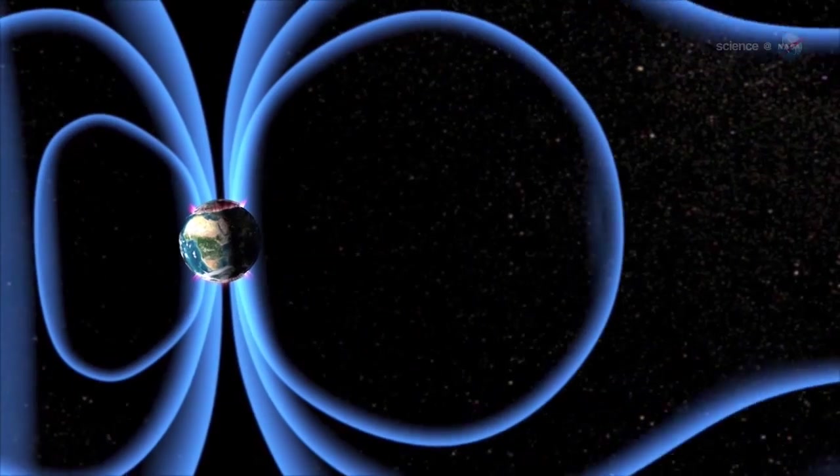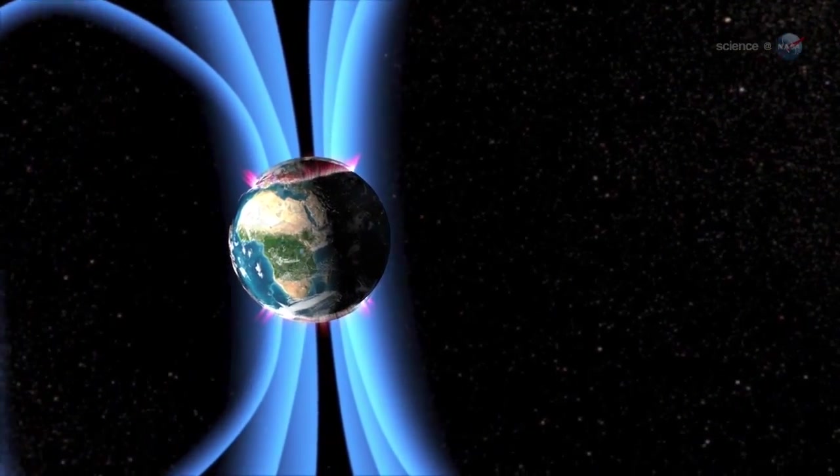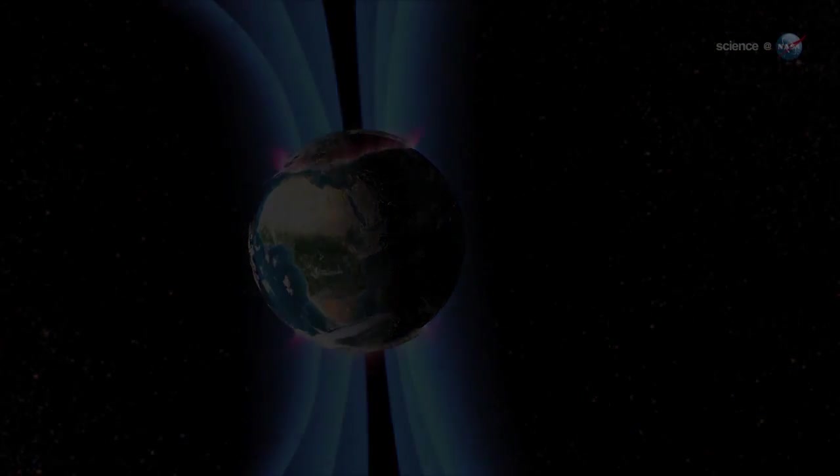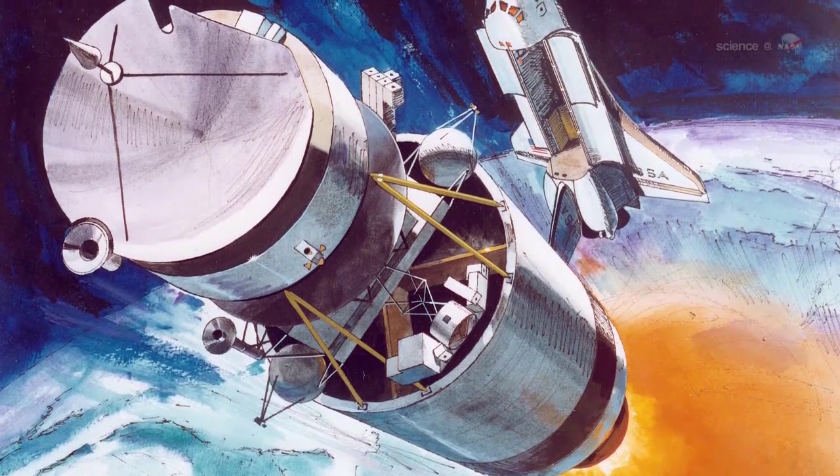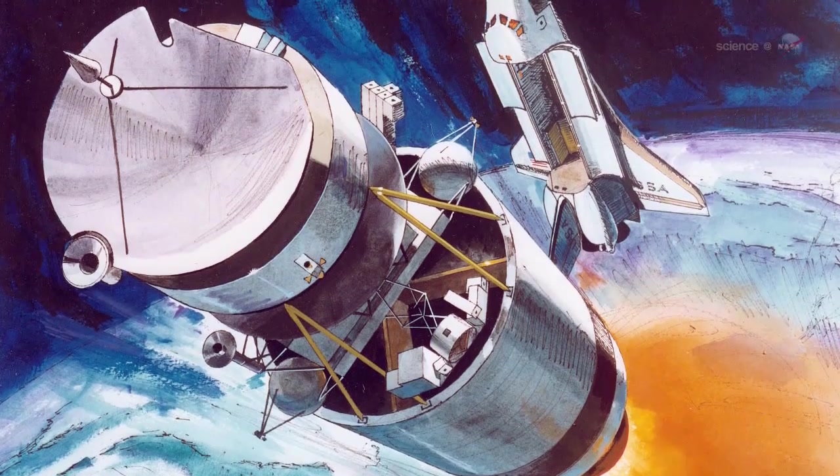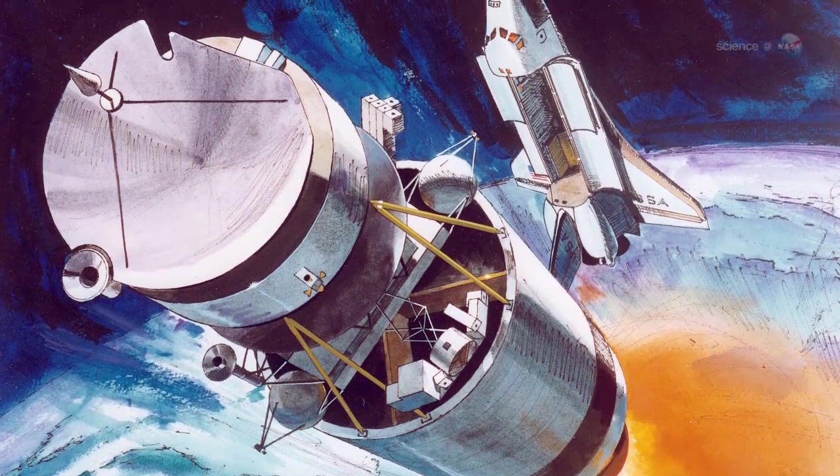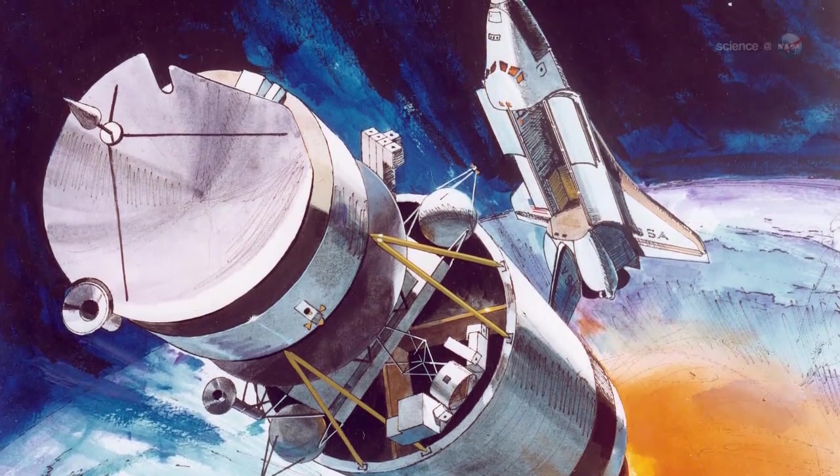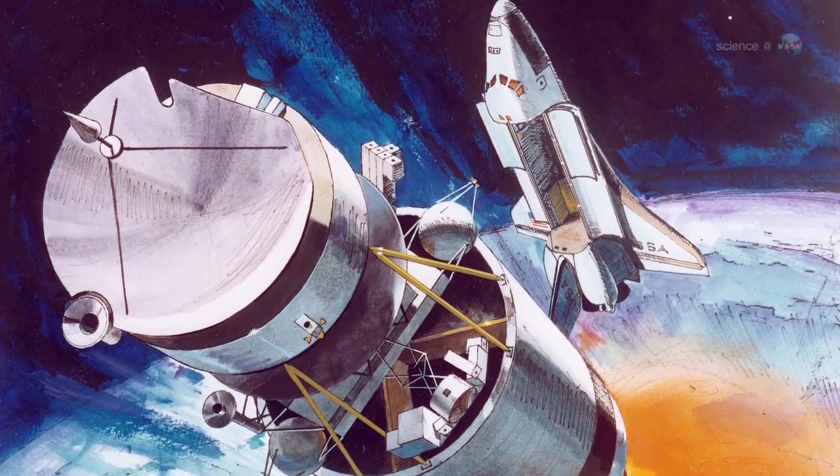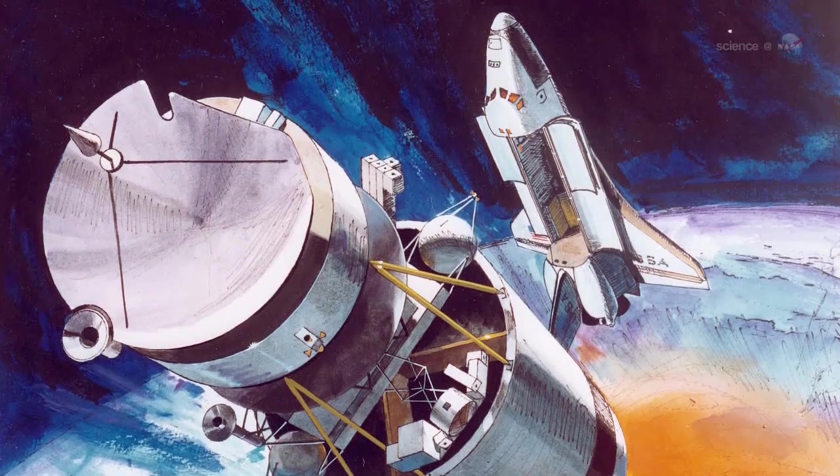To learn how to pinpoint these events, Scudder looked at data from a space probe that orbited Earth more than 10 years ago. In the late 1990s, NASA's Polar spacecraft spent years in Earth's magnetosphere, explained Scudder, and it encountered many X-points during its mission. Because Polar carried sensors similar to those of MMS, Scudder decided to see how an X-point looked to Polar.